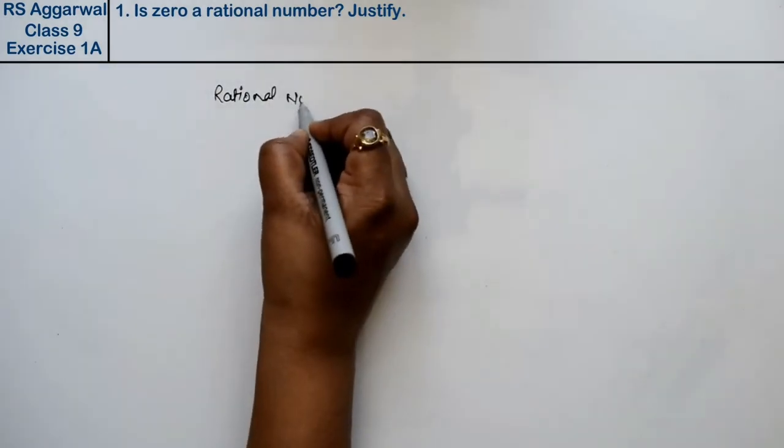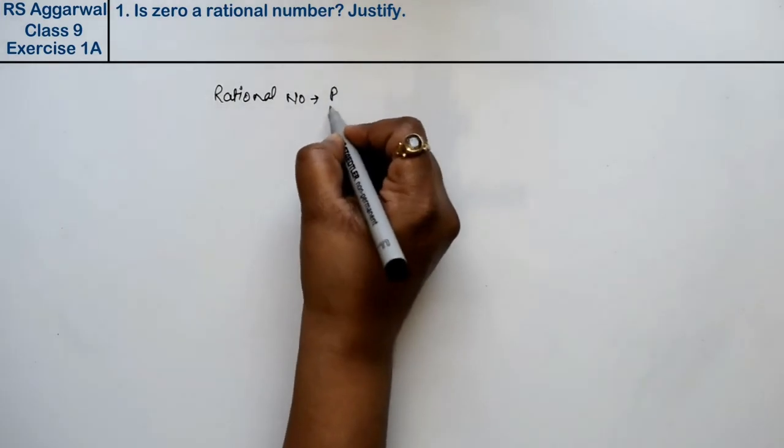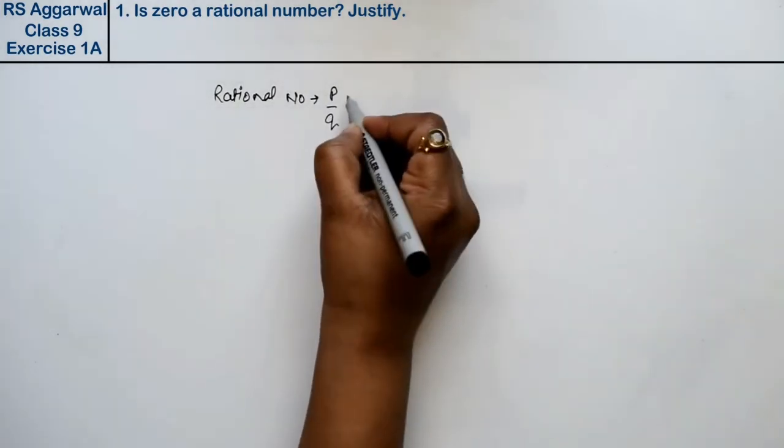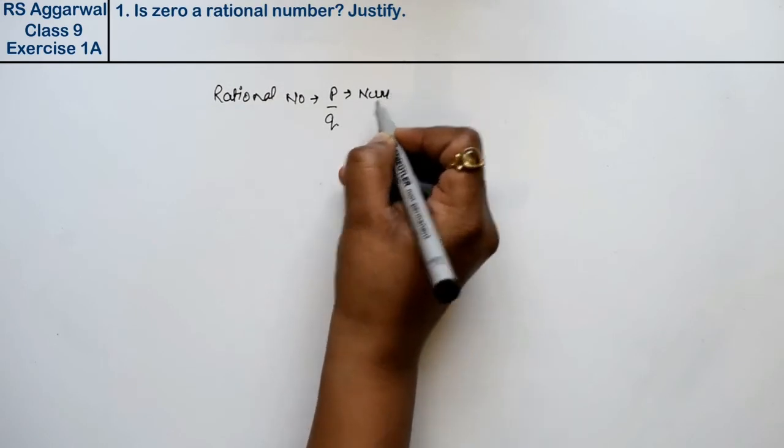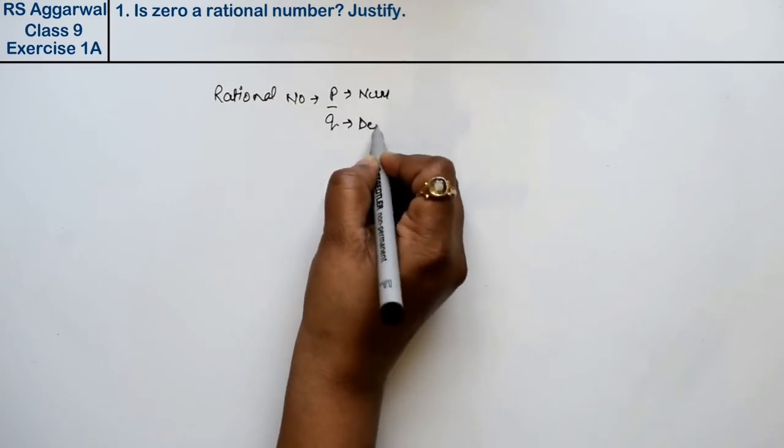Rational numbers are always in the form of p upon q, where p is the numerator and q is the denominator, right friends?